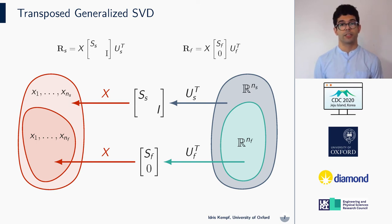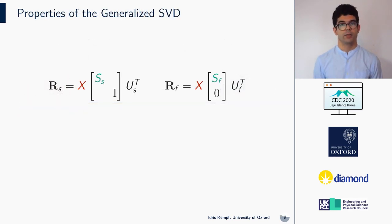These directions are weighted by the diagonal matrices SS and SF. The matrices US and Uf are orthogonal and map the original vector into the generalized mode space. With the assumptions made earlier, the output space basis X is always invertible. The columns of X span the images of Rs and Rf, and in contrast to the SVD, where the matrix of left singular vectors is orthogonal, the matrix X is not.